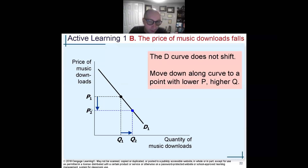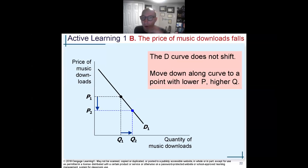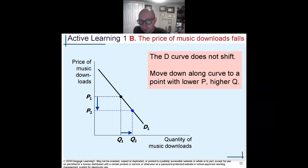What causes a shift in the demand curve is things like more people buying the stuff — more buyers. But if it's just a price change, you'll probably get more downloads but not necessarily more people. Therefore the demand will be higher and the price will be lower, but the movement is along the curve, not necessarily a shift of the curve itself.